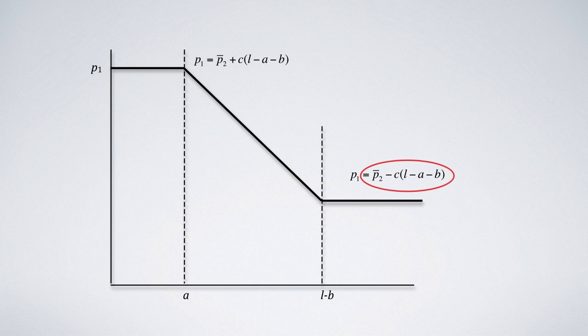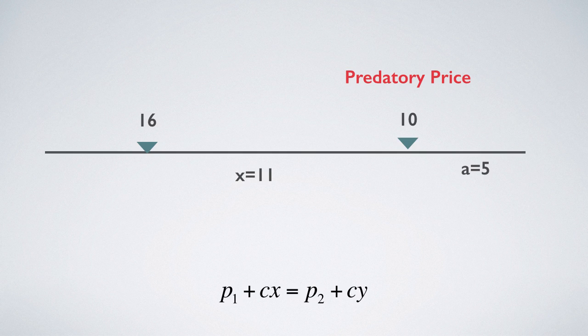The lower price for seller 1 is 16 minus bracket 16 minus 10, or 10, and the profit is 160, which is greater than 128. Hence, seller 1 should set this predatory price to capture the whole market.